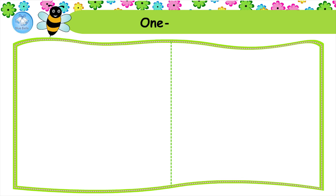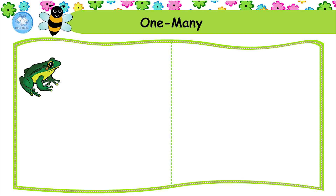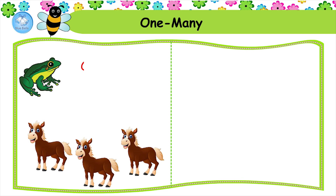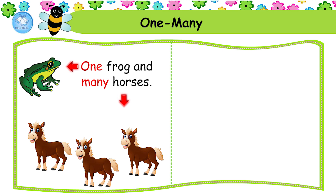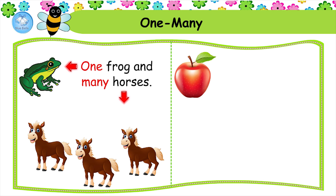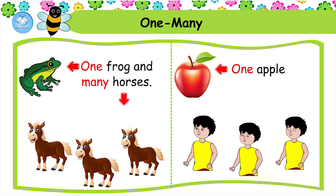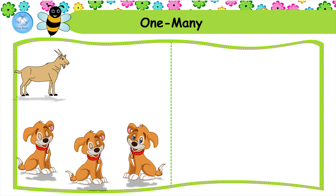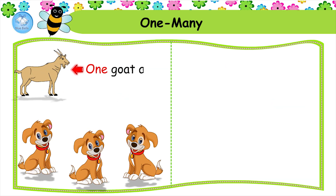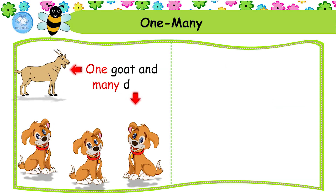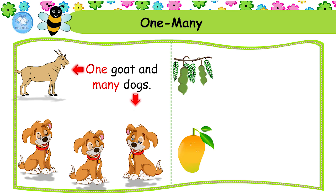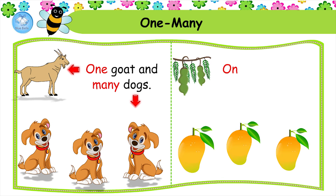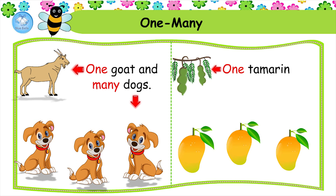One and many. One frog and many horses. One apple and many boys. One goat and many dogs. One tamarind and many mangoes.